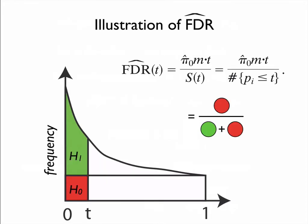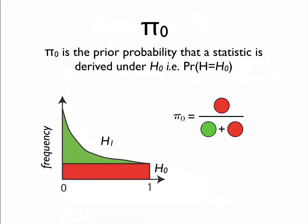Graphically, our estimate of the false discovery rate is the red area — the null hypothesis region — divided by the green plus the red area — the total above the score threshold. The red area is calculated using the fact that null p-values are evenly distributed across the 0 to 1 range.